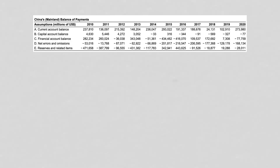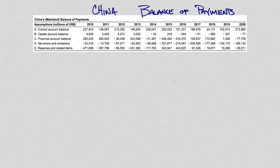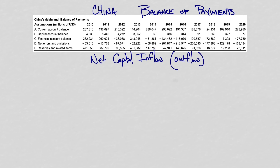This is a full balance of payments account for the country of China. What I'd like to show you is how to calculate something called a net capital inflow, or outflow in the case of a negative number. Let's take a look for just one year — we're going to use 2013. To calculate a net capital inflow or outflow, we take a look at these two categories of the balance of payments.